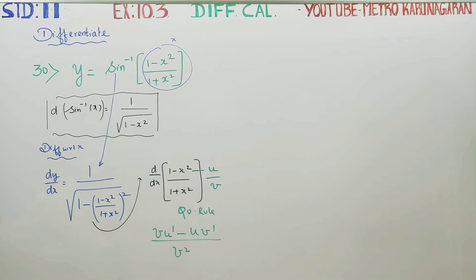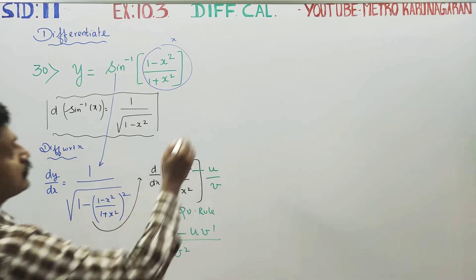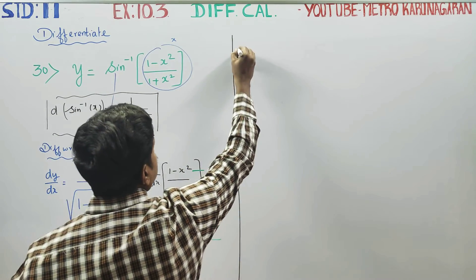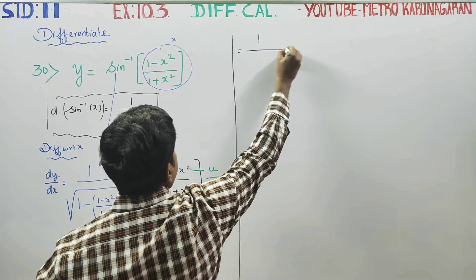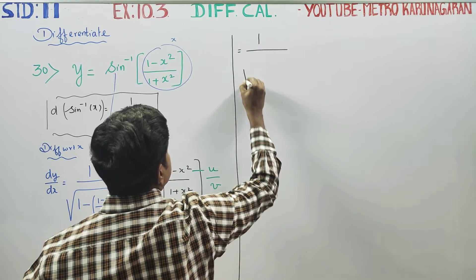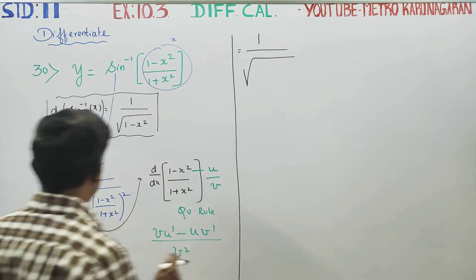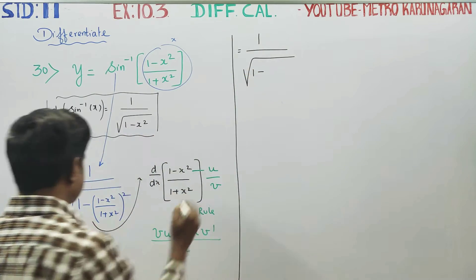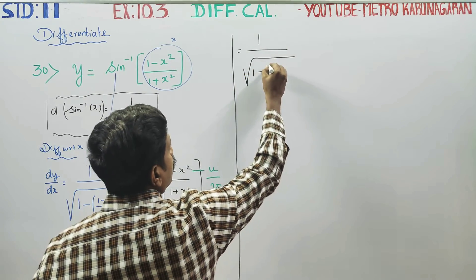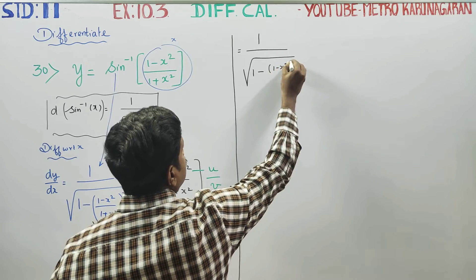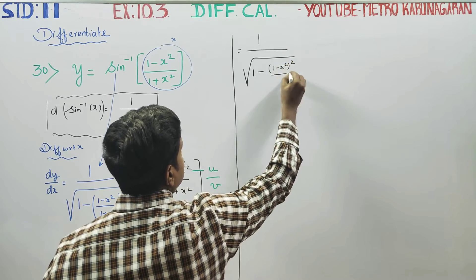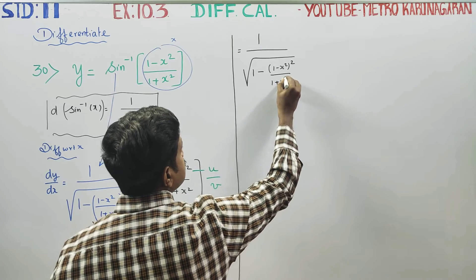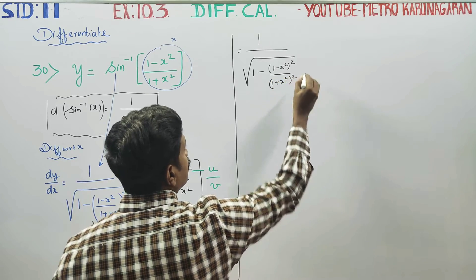The next stage: we have 1 by square root of the expression. The term under the root is 1 minus the square of (1 minus x square) by (1 plus x square), whole squared.